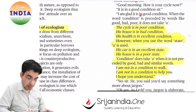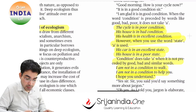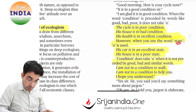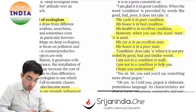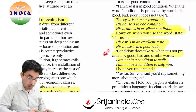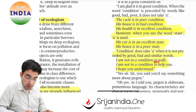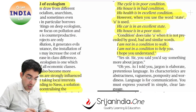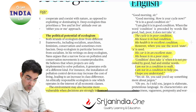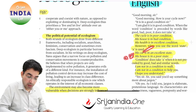English ki baat karein to: 'condition' word ka use — the cycle is in poor condition, his health is in excellent condition. Kayi baar 'state' word bhi use karte hain — his car is in excellent state. Condition does take an article 'a' when it is not preceded by good, bad or similar word. Koi condition kharab batani hai to 'a condition' likhte hain — I am not in a condition to walk. Condition normally ho rahi hai to achhi bhi ho sakti hai, buri bhi; 'a condition' karke bata rahe hain to woh negative hota hai.